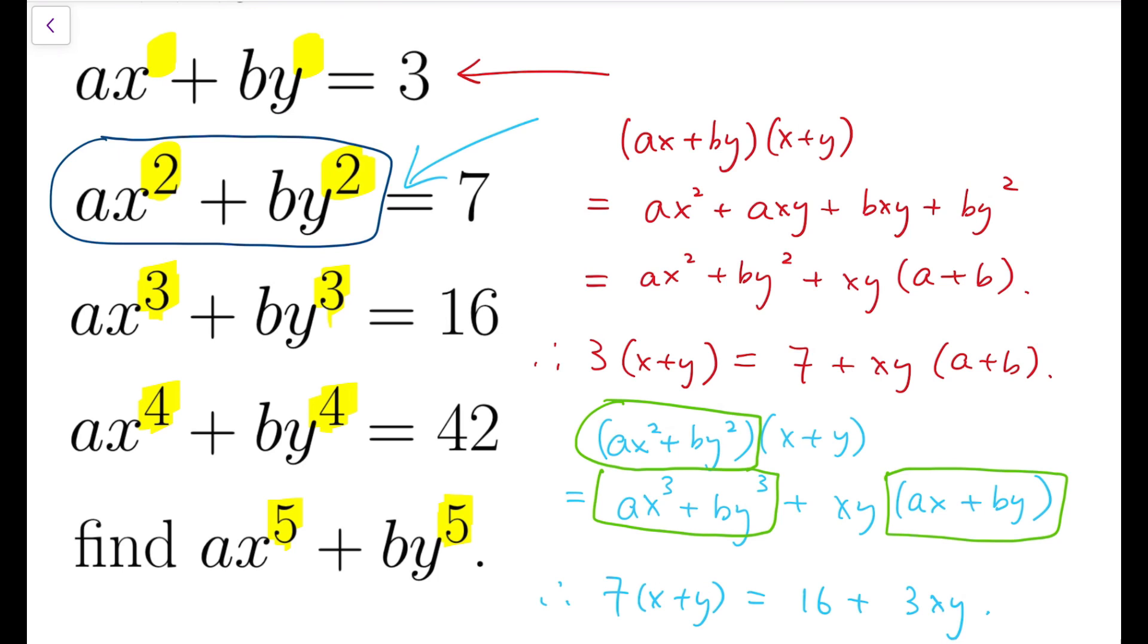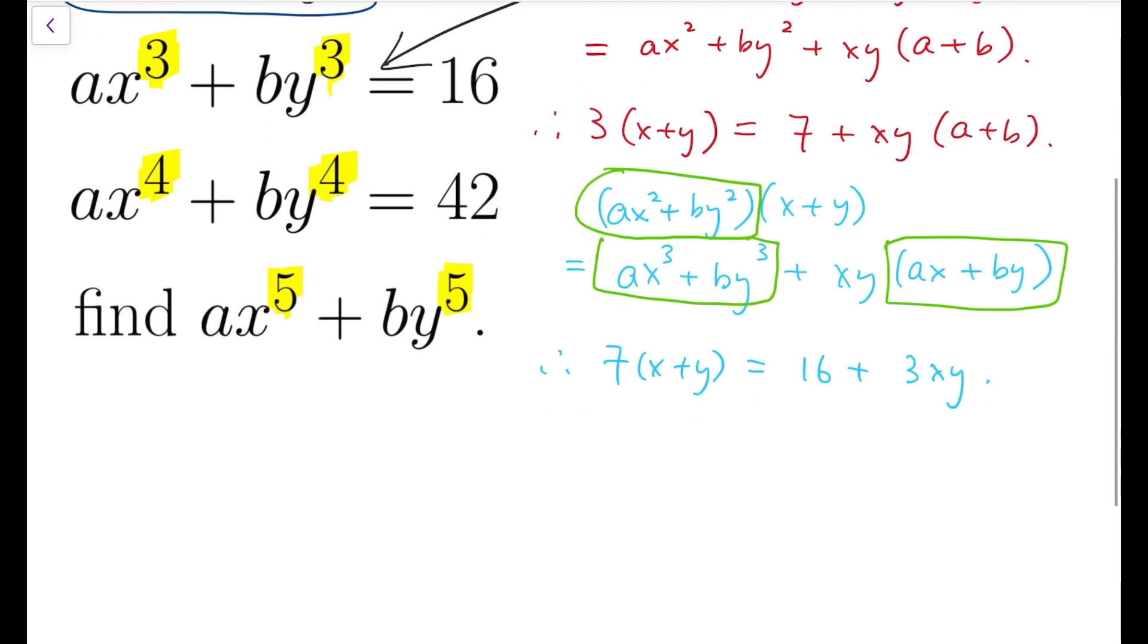Now let's see what we can get by multiplying x + y on both sides of the third equation. Now doing similar things. And using a similar argument, I can regroup the terms. And the other parts would be xy multiplied by ax² + by². And so therefore, 16 times (x + y) equals 42 added by xy times 7.